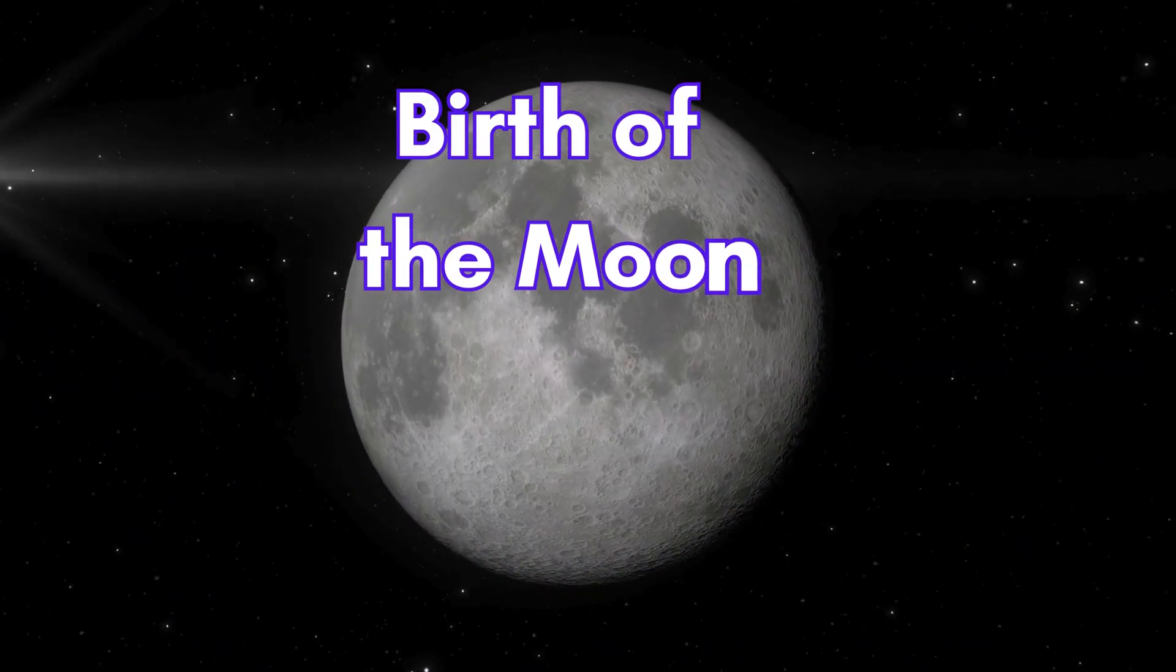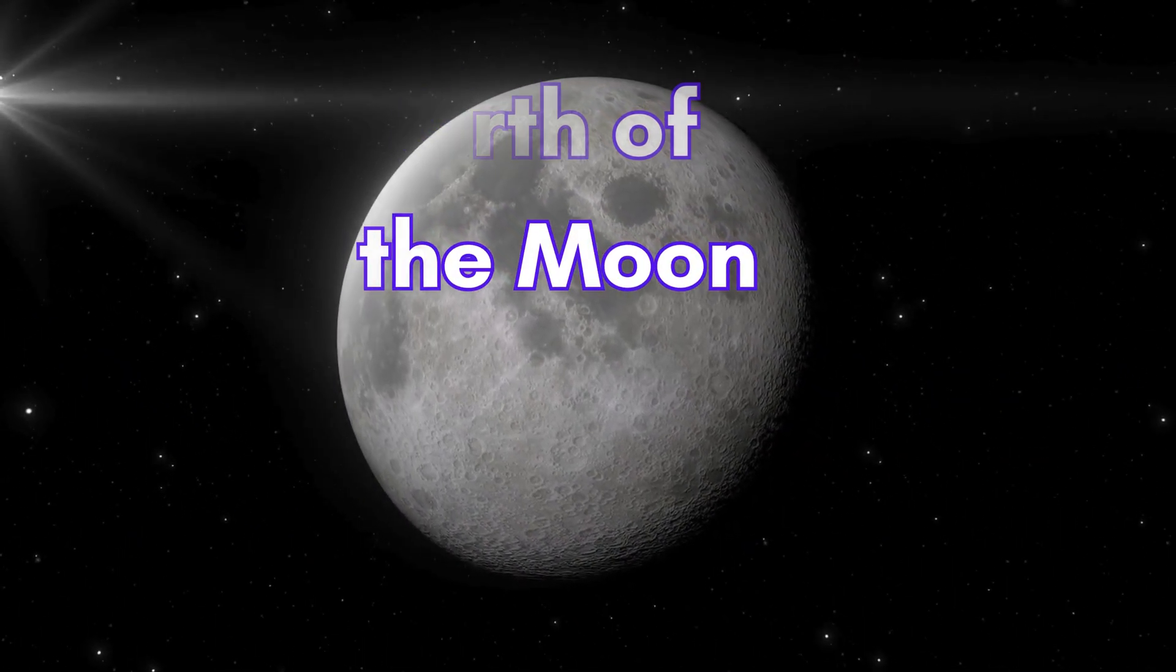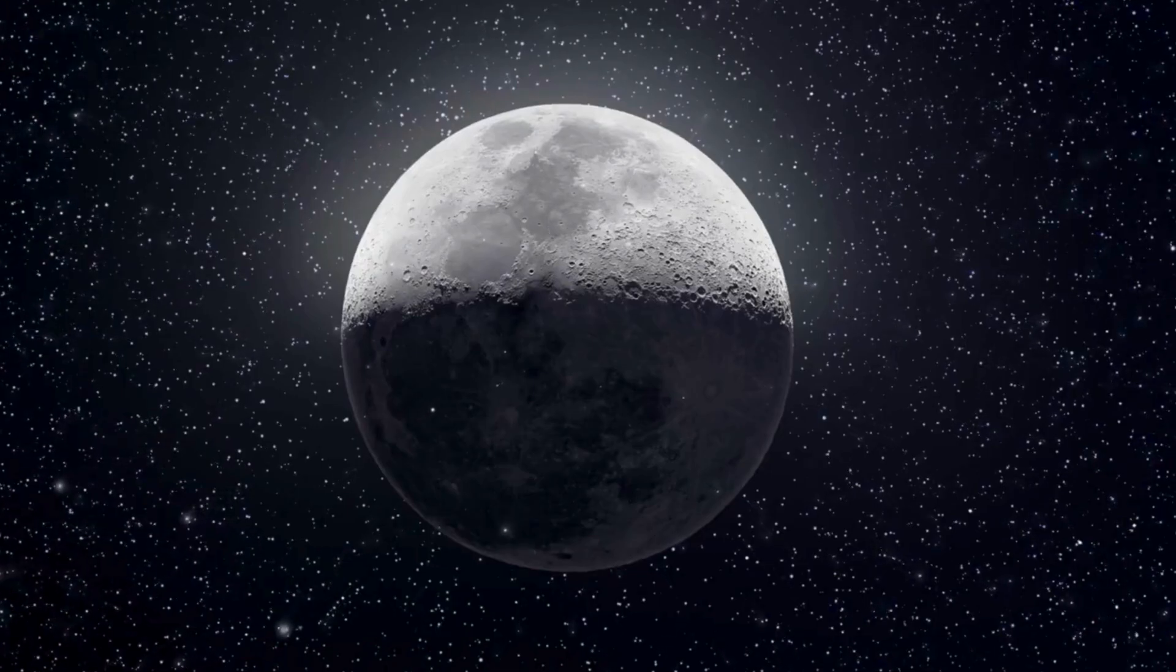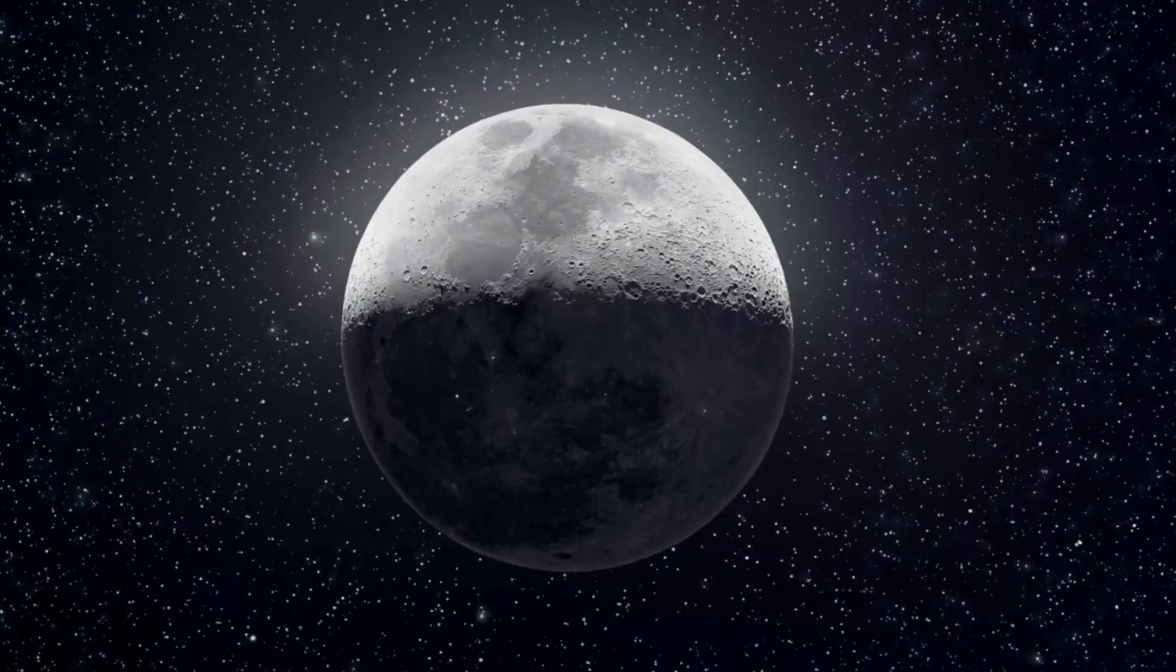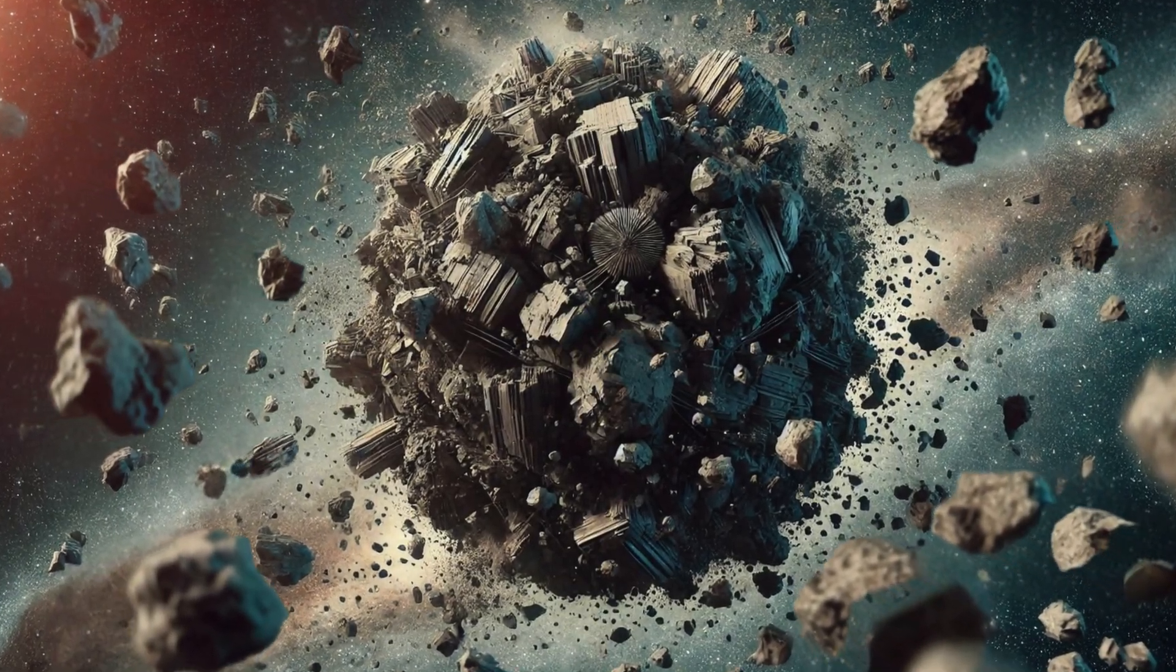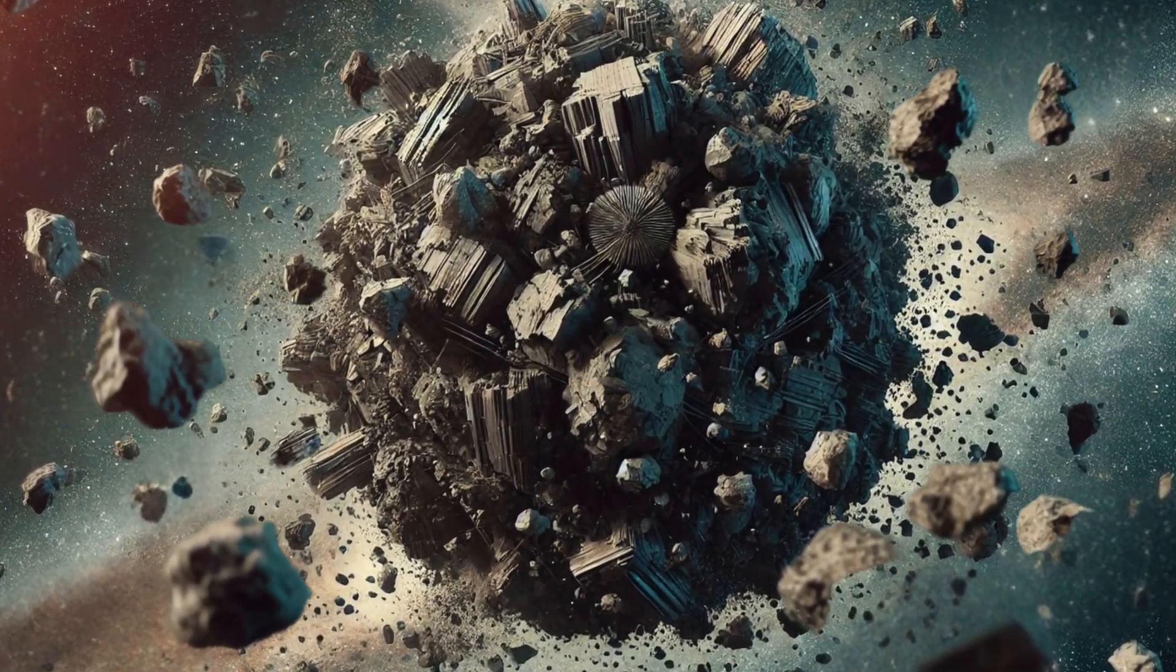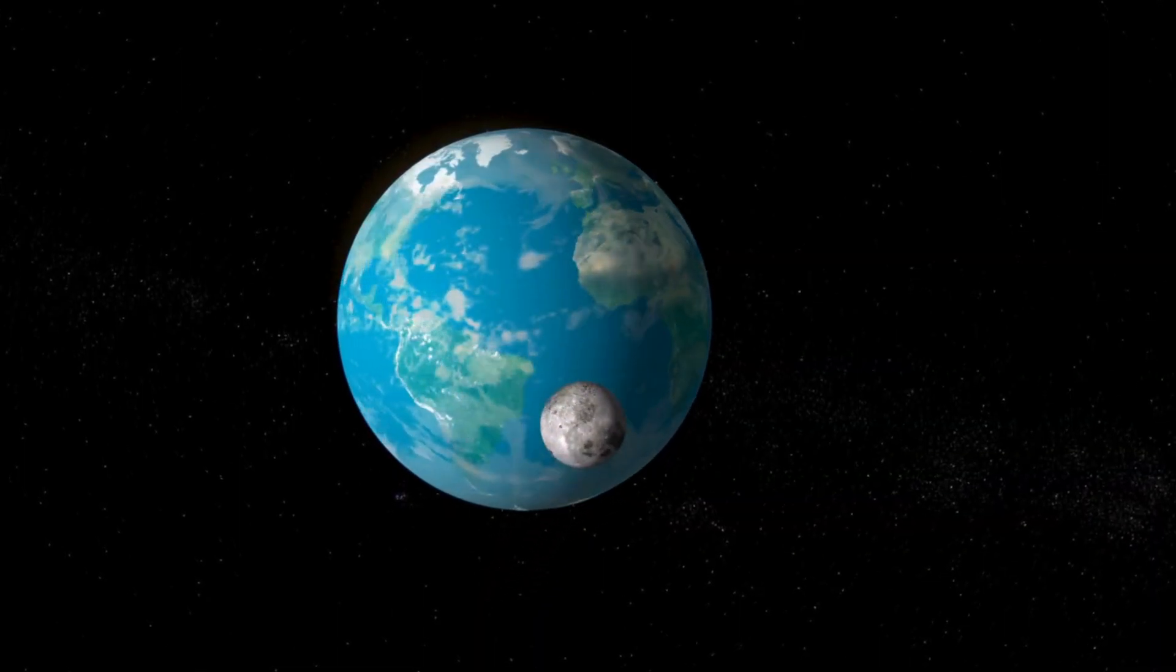Birth of the Moon. From debris to satellite. You see, this is how the Moon was born. Over time, the bits of debris in orbit slowly clumped together, forming a single, massive object. Voila. A brand new satellite for Earth.